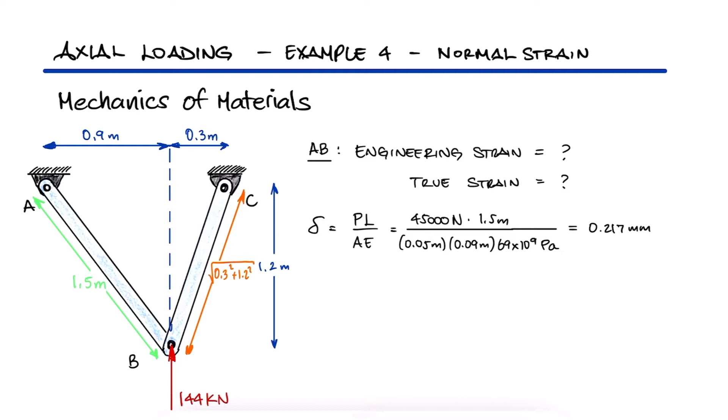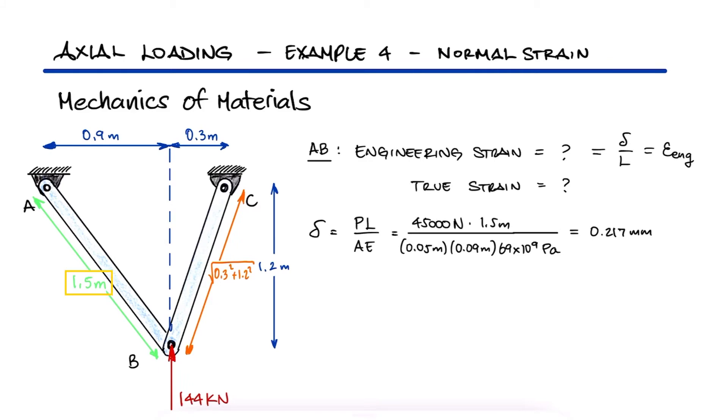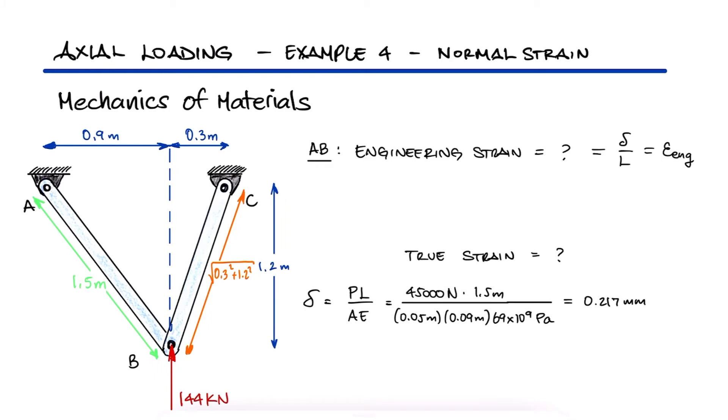From the main axial loading video, we know that engineering strain is defined as delta over L. Using the 1.5 meters that we found for the length of member AB, we can use the given delta in meters to find the engineering strain. And remember that strain is a dimensionless value, even though it's sometimes written as a percentage.